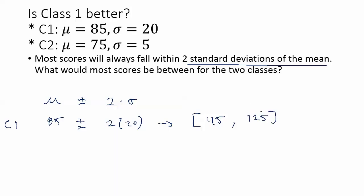Now, practically speaking, this should probably be 100, since we know that's probably the max. But, according to the standard deviation, we should have scores appearing between 45 and 125. So, almost all scores should fall between there. Now, you might have an outlier here and there that falls outside of this range, but typically within two standard deviations is pretty common across the board. Well, for class 2, this is 75 plus or minus 2 times 5, which gives us a much tighter fit between 65 all the